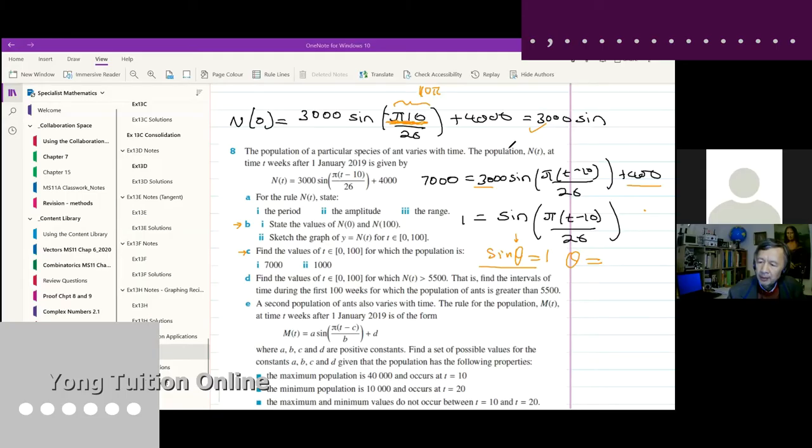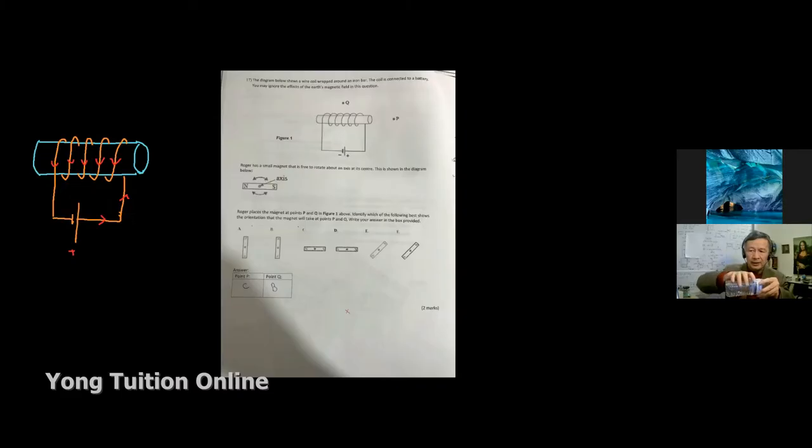Besides, we can also take advantage of those interactive real-time whiteboards. You could add two pi, yes. Two n pi, can we say two n pi? Yeah. So n equals one. Can you see that?